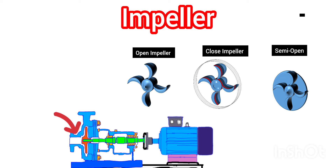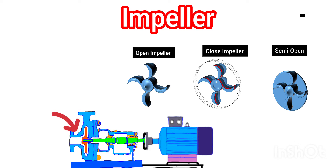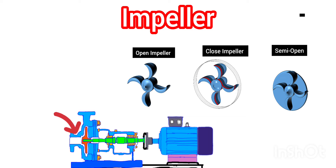Looking at the impeller, you can see three images — there are three types: open impeller, closed impeller, and semi-open impeller. In this video we are not going to discuss the types in detail — when and which type to choose, and the different selection parameters based on process — we will cover that information in a separate video.